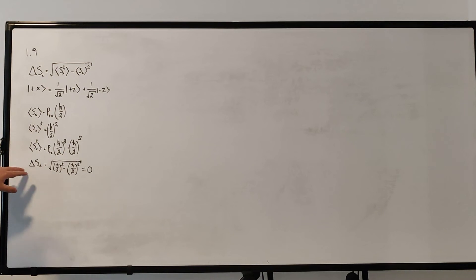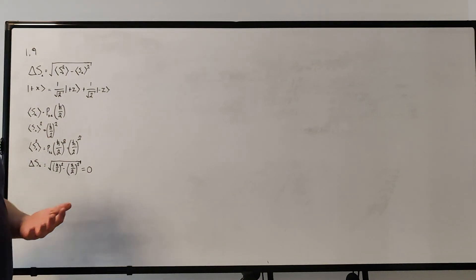And when we plug all that into the equation, we get the square root of h bar over 2 squared minus h bar over 2 squared. So that'd be the square root of 0, which is 0. So that verifies that for a particle in the plus x state, the uncertainty of the x component of spin is 0.